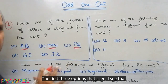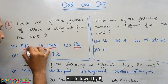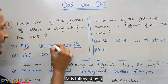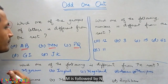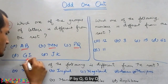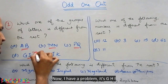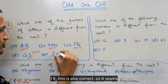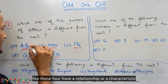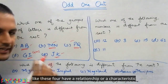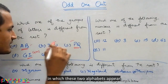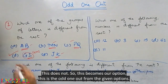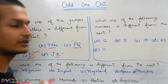Let's see. The first option has A followed by B — adjacent alphabets in the English alphabet. M is followed by N, P by Q — also adjacent. But G is followed by I — in the alphabet it goes G, H, I, so G and I are not adjacent. J and A are also not sequential. So GI does not share the same characteristic, and this becomes the odd one out from the given options.